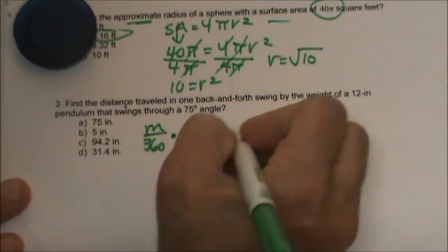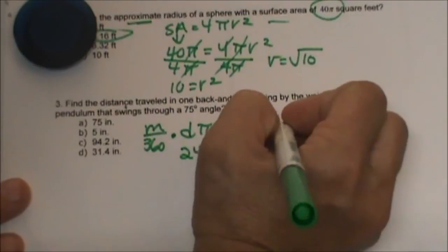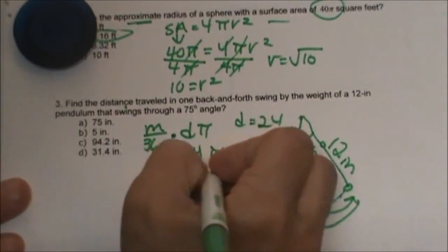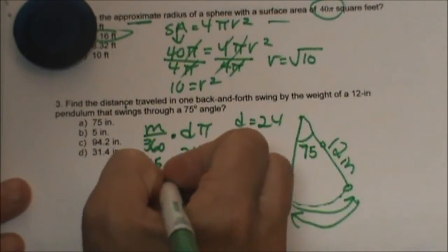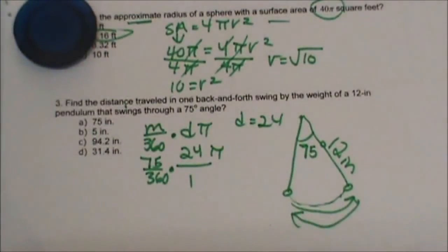That would be 24, wouldn't it? The diameter is 24, 24 pi over 1 and the measure is 75 over 360. So let's just clean that up a little bit.